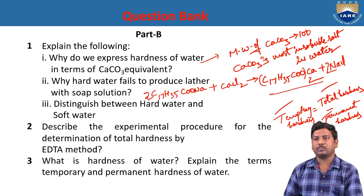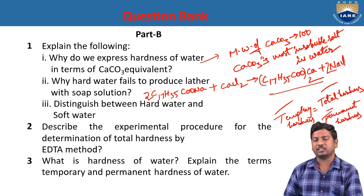What is hardness of water? Explain temporary and permanent hardness. Hardness is when a sample of water cannot give lather with soap. It is classified into two types: temporary and permanent. Temporary hardness is caused by bicarbonate salts of calcium and magnesium. Permanent hardness is caused by chloride and sulphate salts of calcium and magnesium.